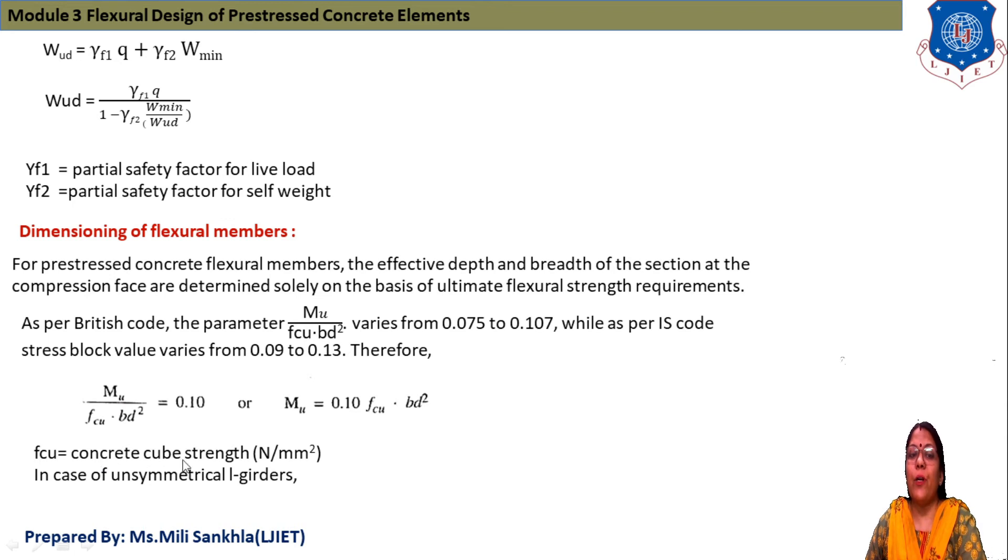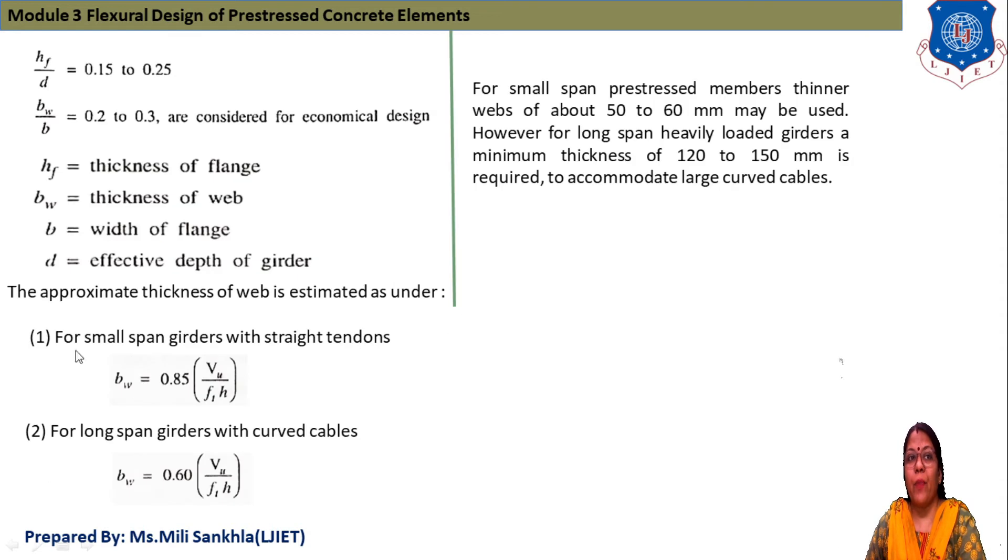FCU is concrete cube strength. In case of unsymmetrical I-girder, HF/D equals 0.15 to 0.25, and ratio BW/B equals 0.2 to 0.3 are considered for economical design, where HF is thickness of flange, BW is thickness of web, B is width of flange, D is effective depth of girder.